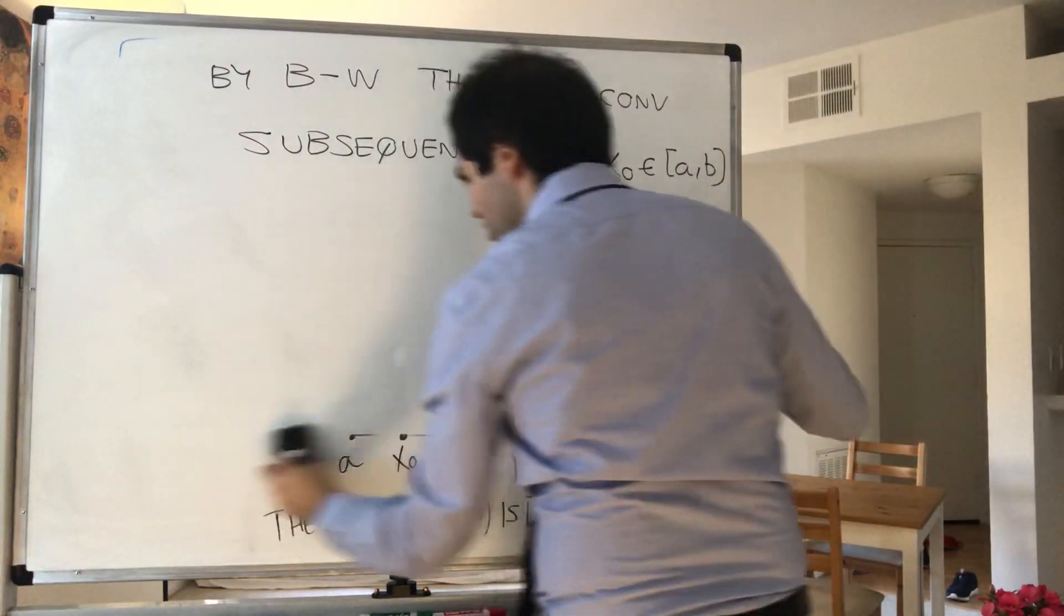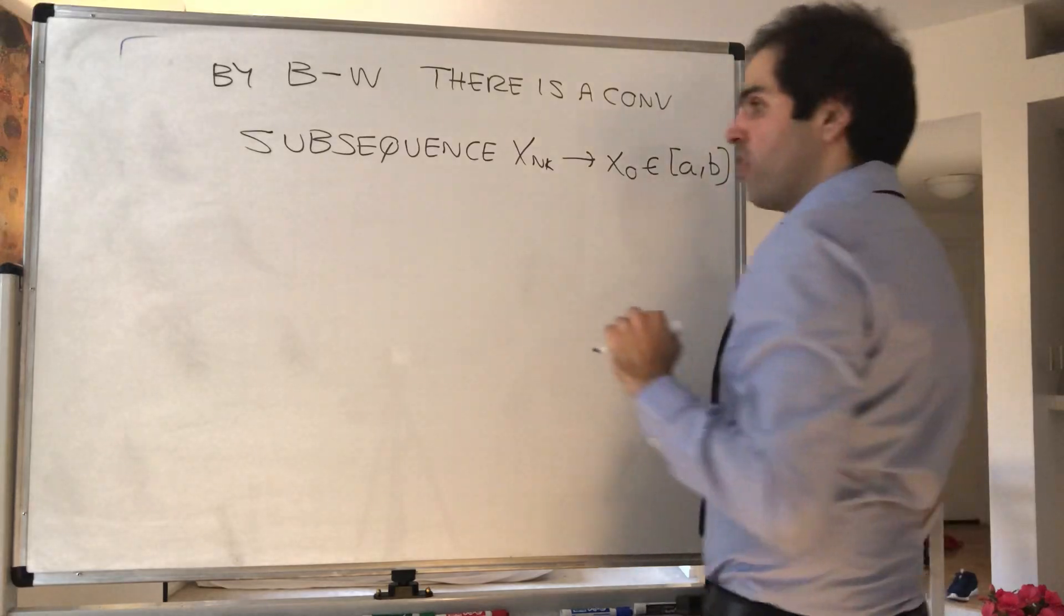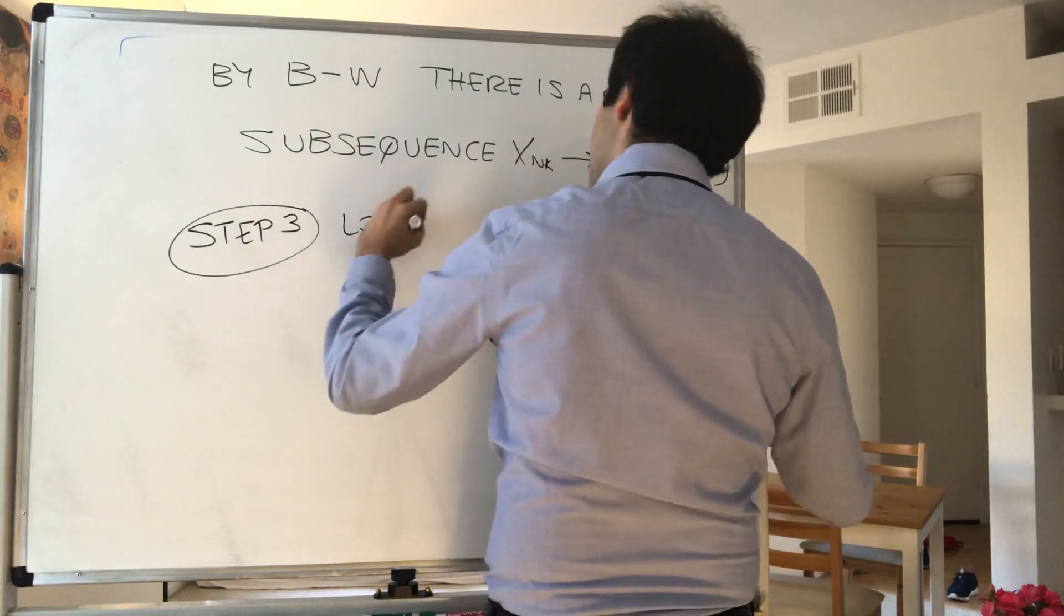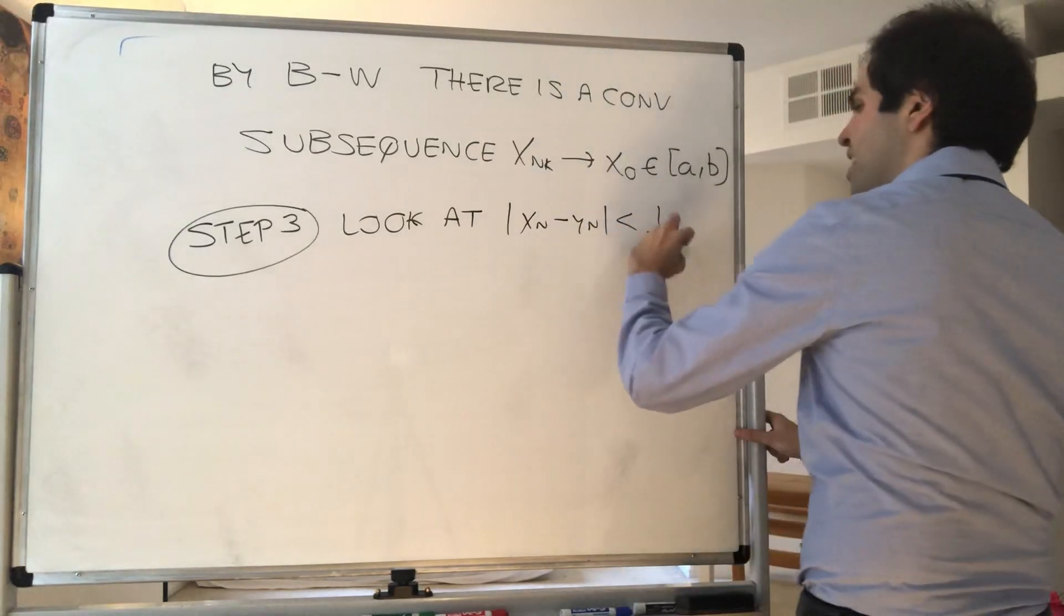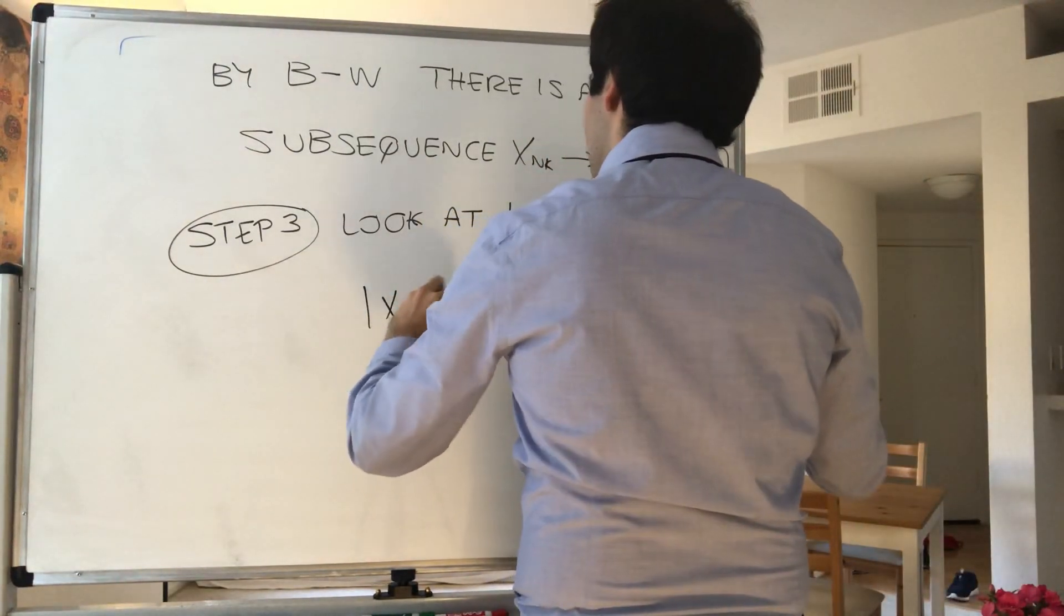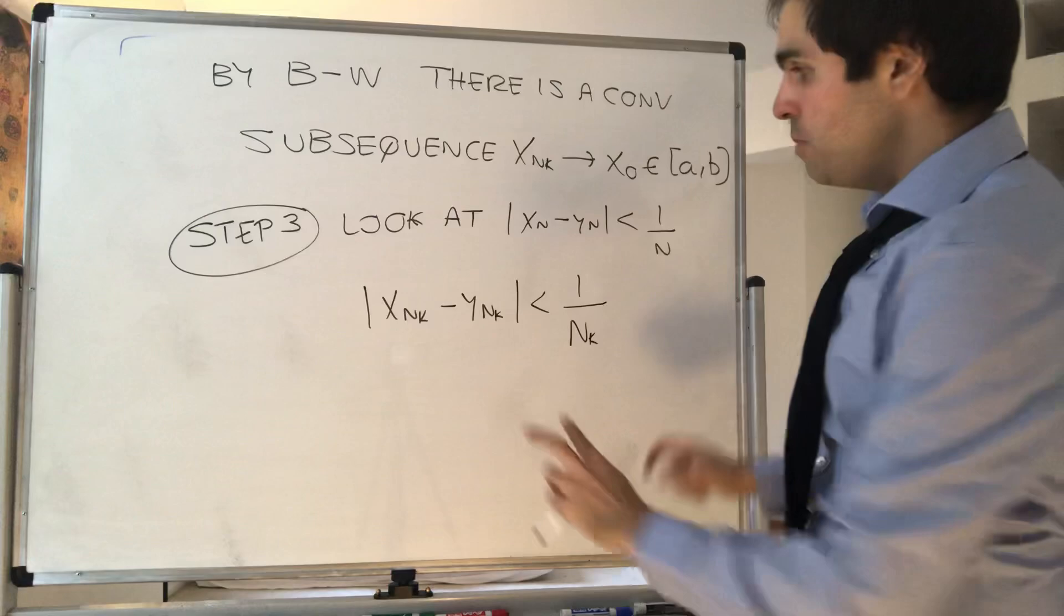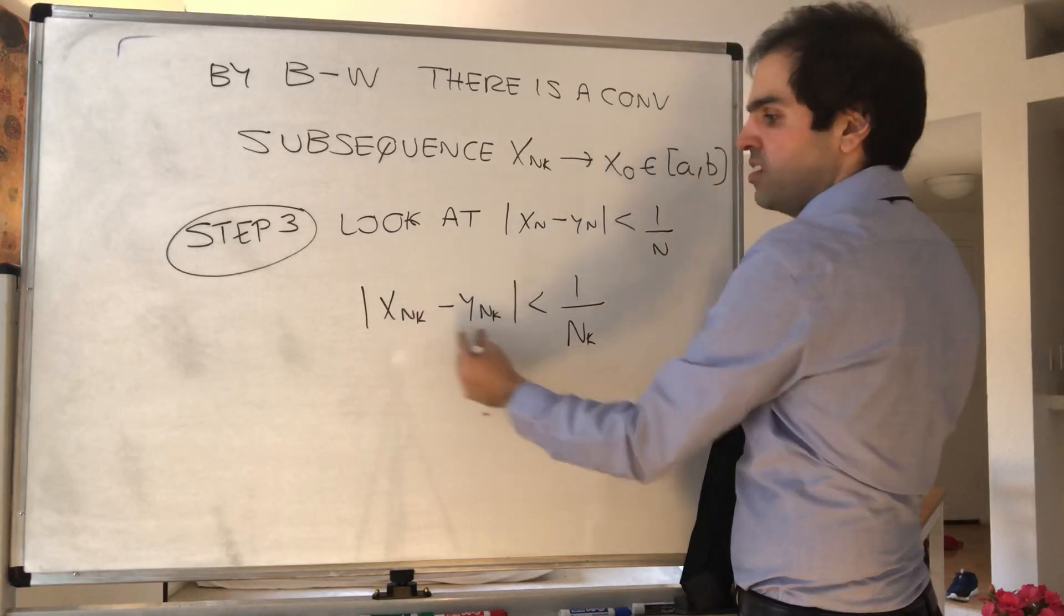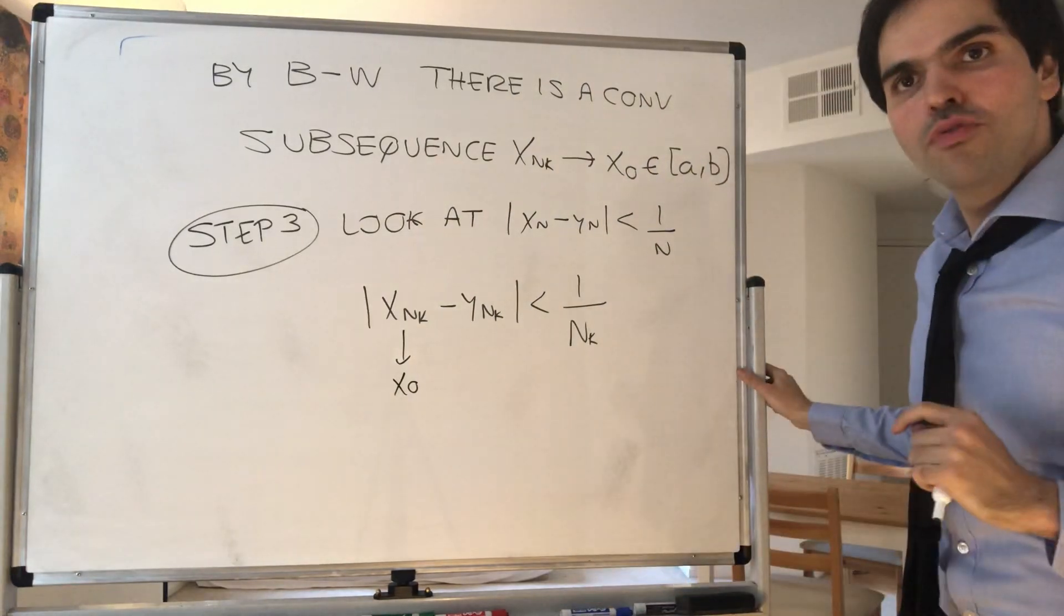And therefore, well, again, x_nₖ is a nice sequence. So look now at one of our other inequalities. Step three. Look at one thing we had: |xₙ - yₙ| < 1/n. So in particular, this is true for the subsequence: |x_nₖ - y_nₖ| < 1/nₖ. But this means those two sequences are very close together, and basically, since this goes to x₀, it implies that this goes to x₀. But let me prove this as a separate claim.